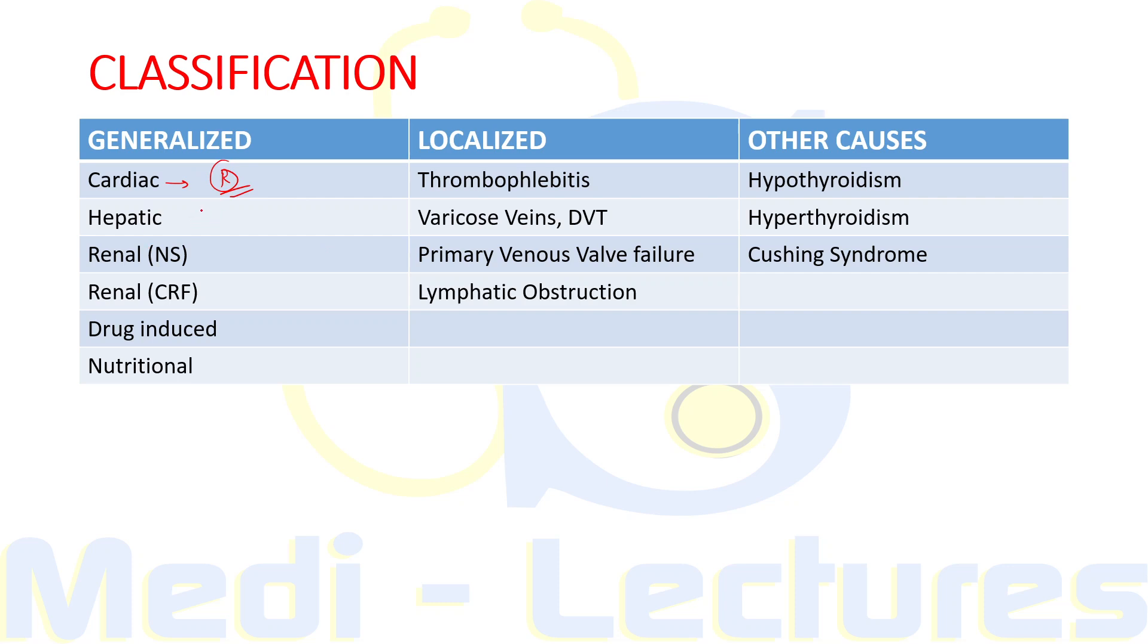Then hepatic causes like chronic liver disease, chronic liver failure, there will be decreased protein synthesis leading to decreased plasma oncotic pressure. Similarly, in nephrotic syndrome, increased protein loss will lead to decreased plasma oncotic pressure. Chronic renal failure will increase the hydrostatic pressure leading to edema.